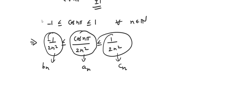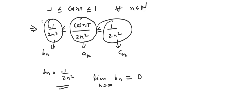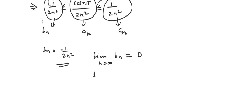Now observe: the limit as n → ∞ of bₙ = −1/(2n²) is 0, and similarly the limit as n → ∞ of cₙ = 1/(2n²) is also 0 — the same result, just without the negative sign.